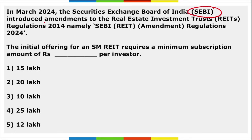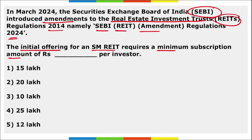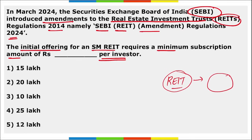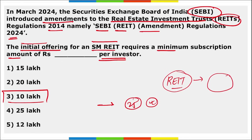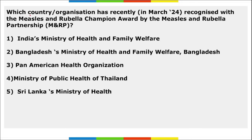Next: SEBI introduced amendments to Real Estate Investment Trust (REIT) Regulations 2014, named SEBI REIT Amendment Regulations 2024. What is a REIT — Real Estate Investment Trust? It means you can buy a small fractional portion of a big real estate property and receive returns as per your ownership. The initial offering for an SM REIT requires a minimum subscription amount of ₹10 lakh per investor — reduced from an earlier requirement of ₹25 lakh.